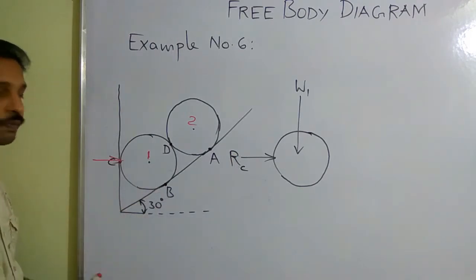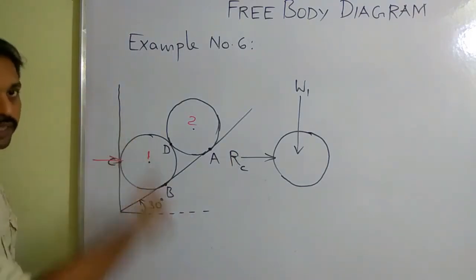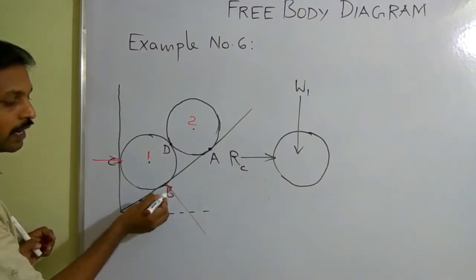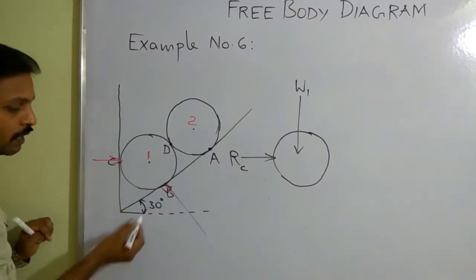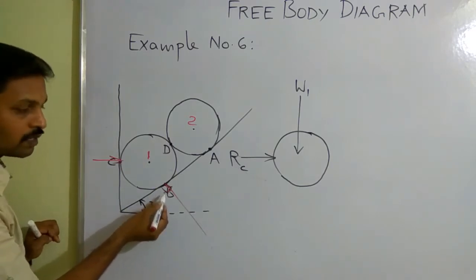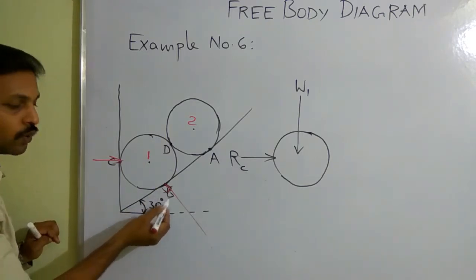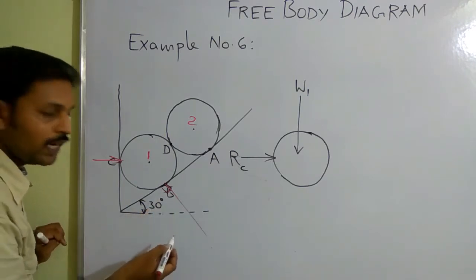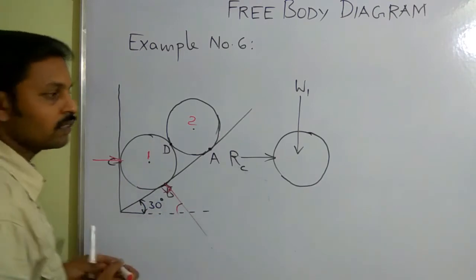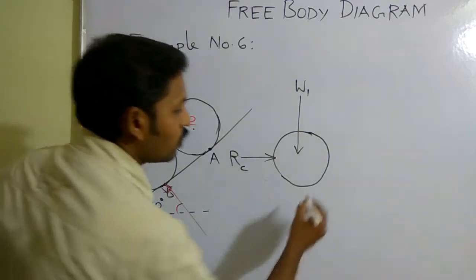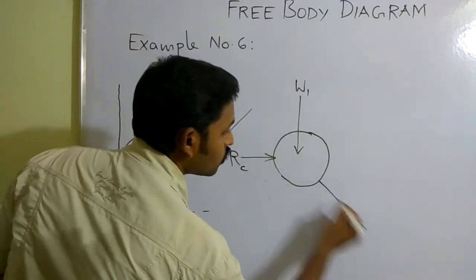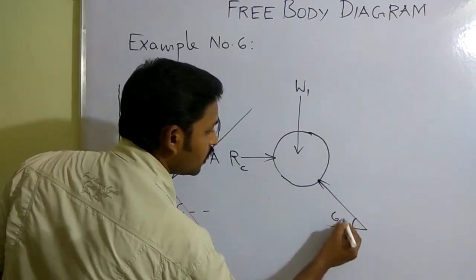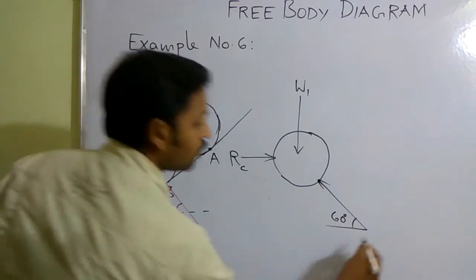At contact point C, the reaction is RC. At contact point B, the roller is not able to move in that direction, so you need to represent a reaction perpendicular to the inclined surface. If this angle is 90° and this is 30°, the total is 120°. Since the angles sum to 180°, the remaining angle is 60°, meaning the reaction at B makes an inclination of 60° with the horizontal.